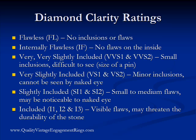The next step in the rating chart is very, very slightly included, and there are actually two sections within this rating scale: VVS1 and VVS2. VVS1 is a higher quality than VVS2. These diamonds have very small inclusions that are very difficult to see even under high magnification. The general rule of thumb is that these blemishes cannot be any bigger than the size of a pin, which gives you an idea of how small they are.